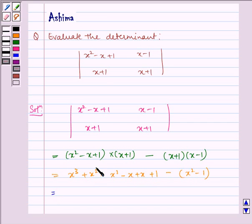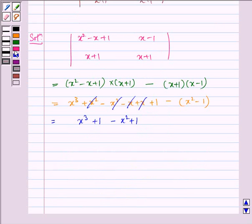The terms cancel, so we are left with x³ + 1. Opening the brackets, we get minus x² plus 1, which equals x³ - x² + 2. Hence, the required answer is x³ - x² + 2.